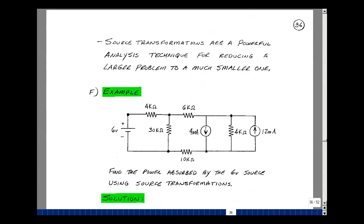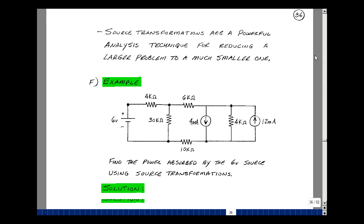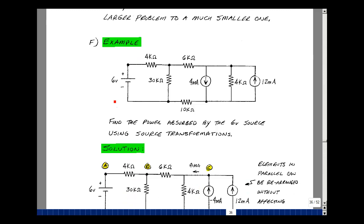Now source transformations are a very powerful analysis technique that allows us to take a large problem and reduce it to a much smaller one. Let me do an example. Suppose I have a voltage source, two current sources, and five resistors. Let's find the power absorbed by this six volt battery, which means I've got to find the current in that direction, by using source transformations. So I don't really care what the rest of the circuit's doing. I just want to solve for a specific current. So I can reduce all of this to a much simpler circuit by using transformations.